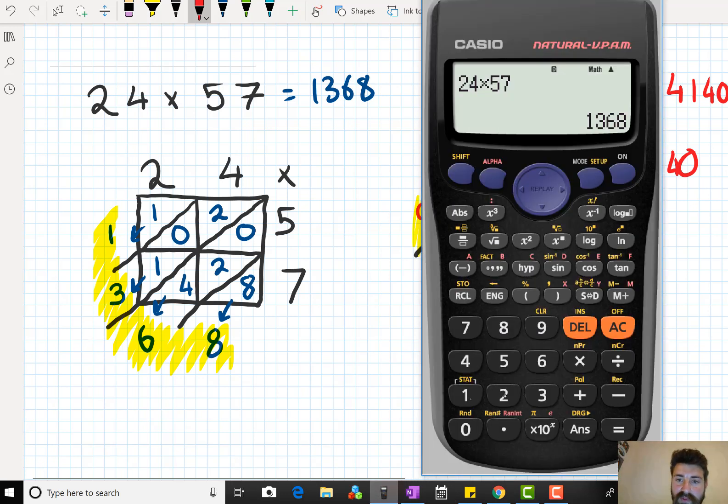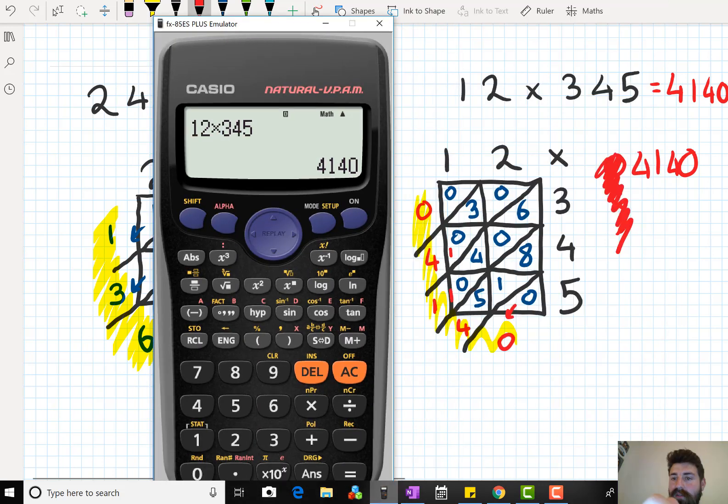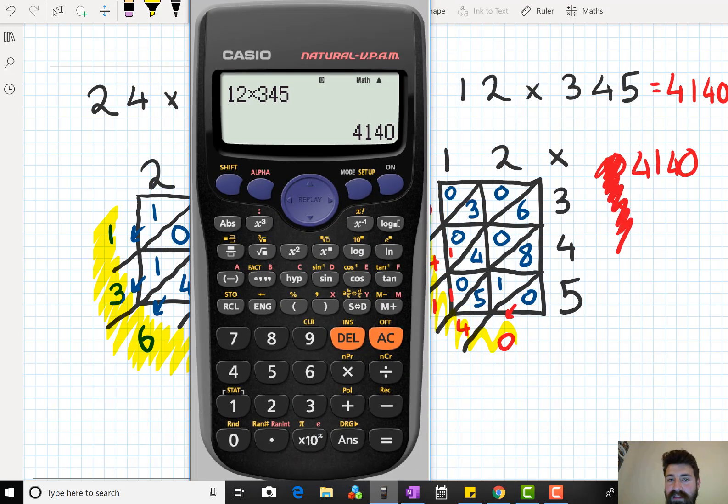Just to double check. 12 times 345. 4,140. As claimed there.